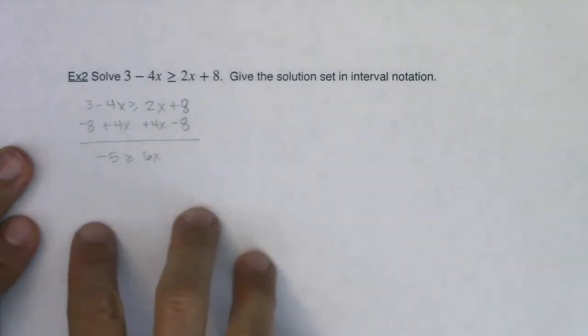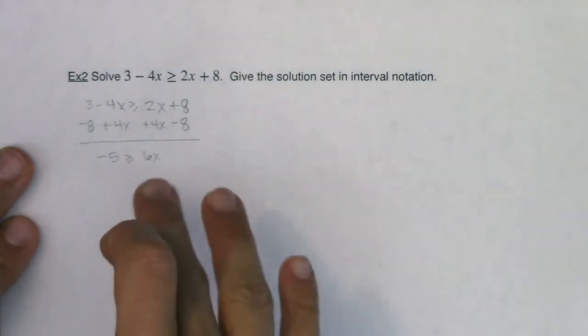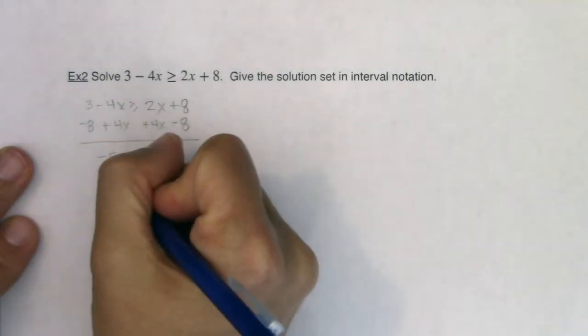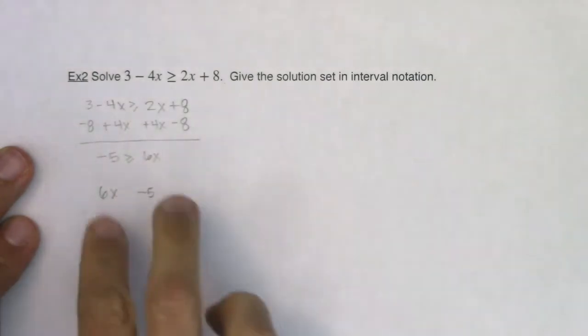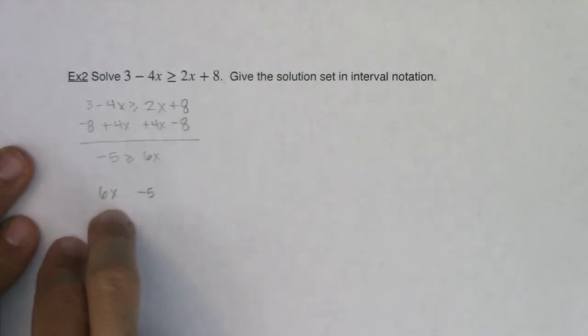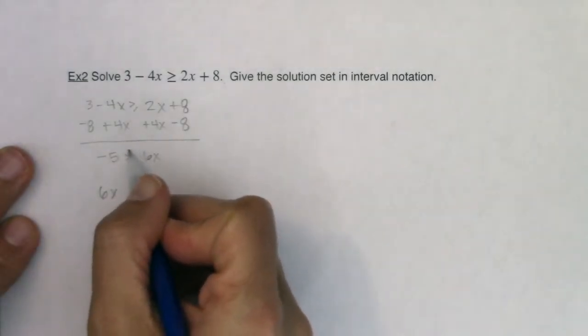And for me again, I personally like when I have my variable on the left side. So I would want the 6x over here and the 5 over here. But when you switch the sides like that, you have to change the direction of the inequality.